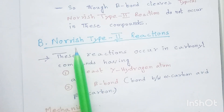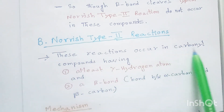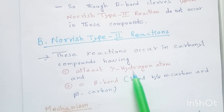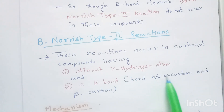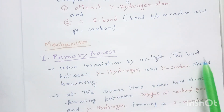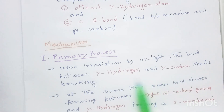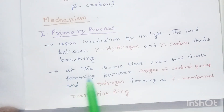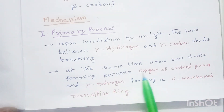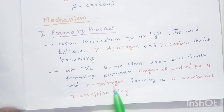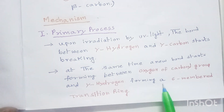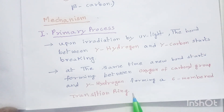Let us see Norrish type 2 reactions. These reactions occur in carbonyl compounds having at least one gamma hydrogen atom and a beta bond — that is the bond between alpha carbon and beta carbon. In the primary process, upon irradiation by UV light, the bond between the gamma hydrogen and gamma carbon starts breaking. At the same time, a new bond starts forming between the oxygen of the carbonyl group and the gamma hydrogen, forming a six-membered transition ring or state.